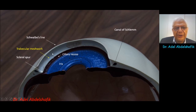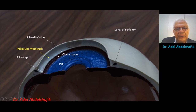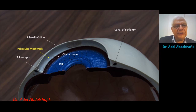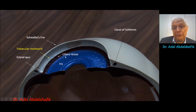Behind it, you have the trabecular meshwork, then the scleral spur. Here you have the ciliary recess and iris. We all know that aqueous passes through the trabecular meshwork to reach the canal of Schlemm. So you need to start by identifying Schwalbe's line so you can see whether the trabecular meshwork is visible or not. This is the starting point.